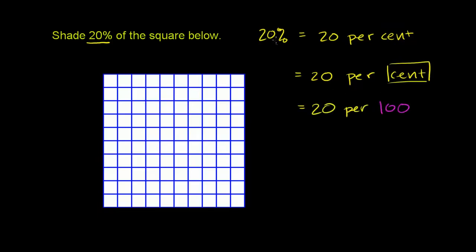20 percent means if we want to shade 20%, we need to break up the square into 100 pieces and shade 20 of them. 20 per hundred.